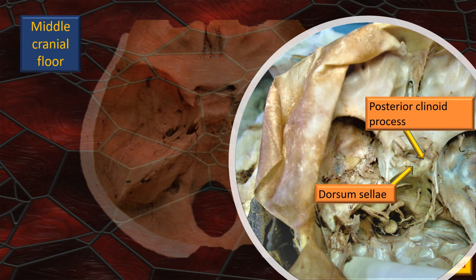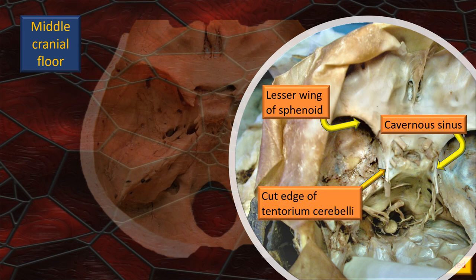Also seen in this wet specimen is the dorsum sellae — the posterior wall of the fossa — and its upper lateral extension, the posterior clinoid process. The prominent lesser wing of the sphenoid, covered by a cloth of dura, is seen. The cavernous sinus is located on either side of the pituitary fossa — the bent arrow refers to the right and left cavernous sinuses. At the upper lateral edge of the pituitary fossa there is a prominent fold — a dural fold — which is the cut edge of the tentorium cerebelli, cut to remove the brain.